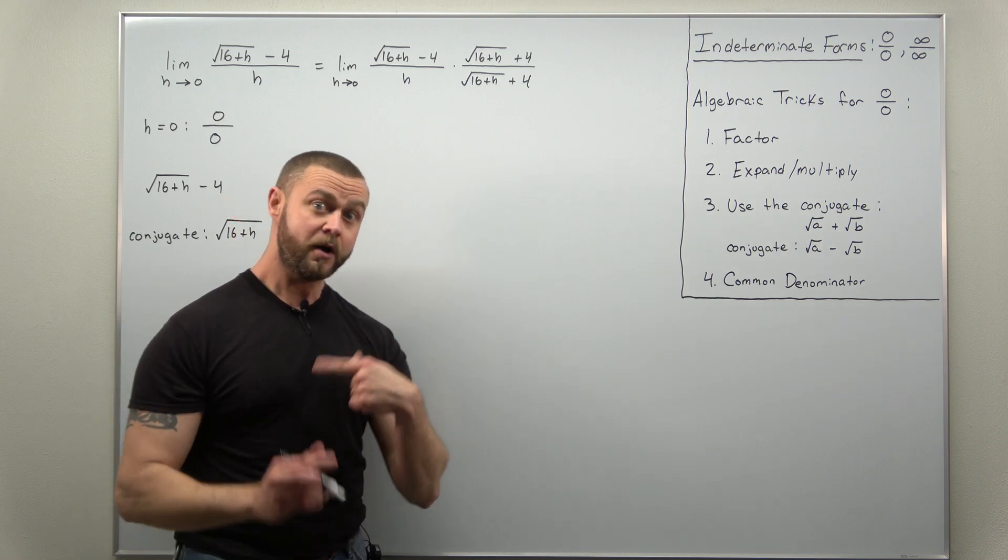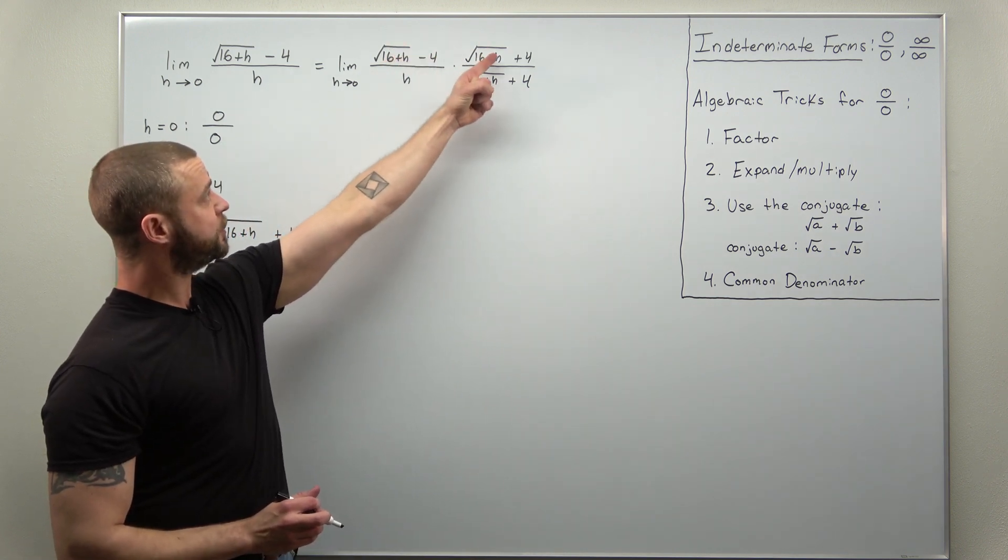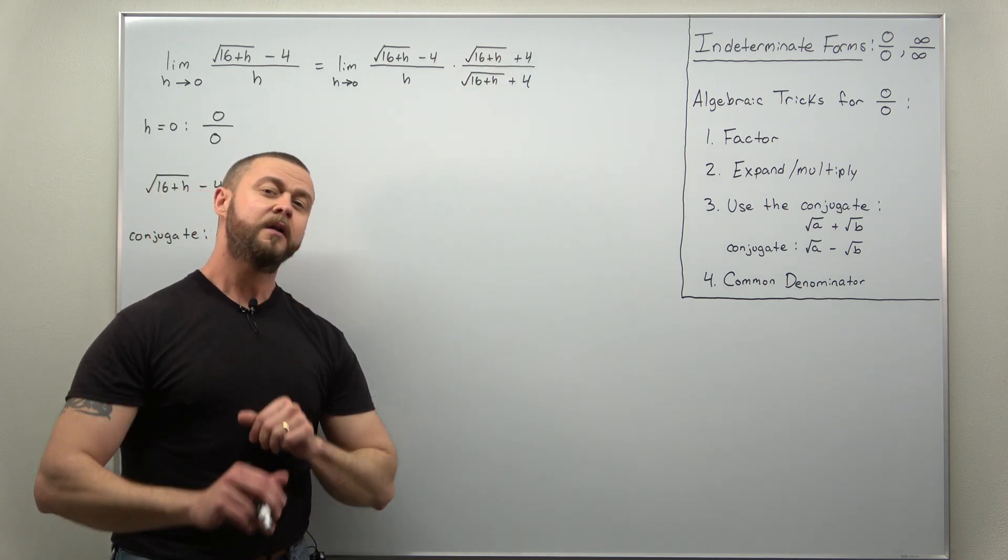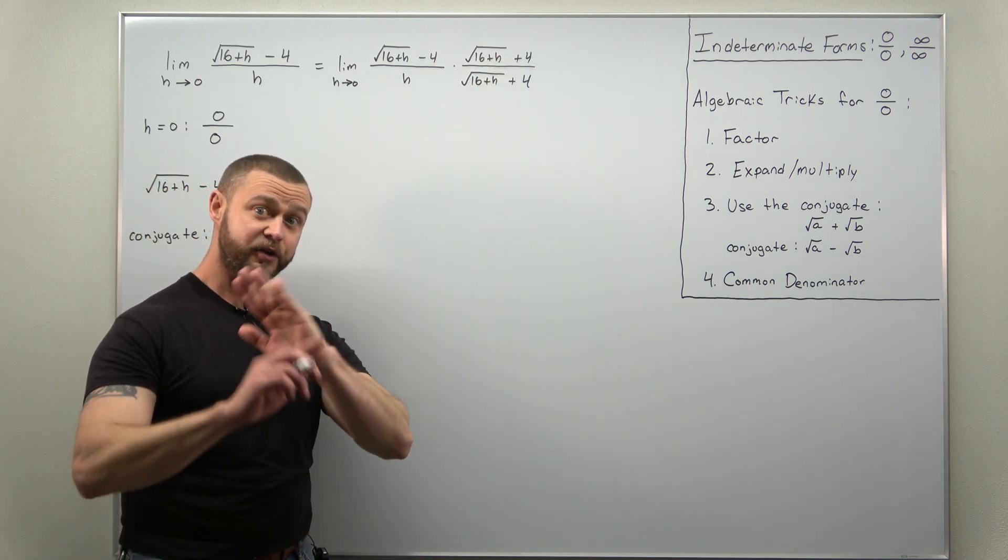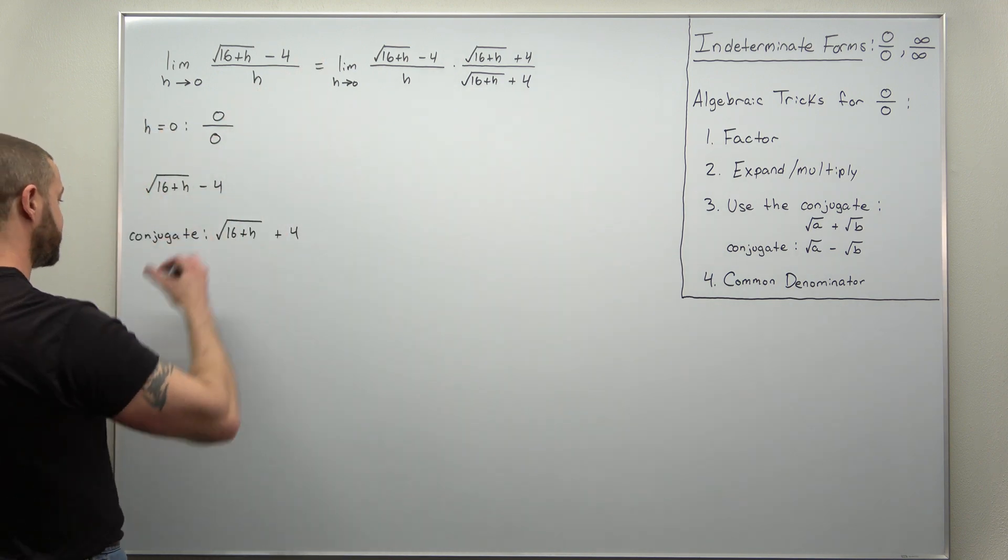Alright, now the rest of the work here, why we use the conjugate, is when you have an expression being multiplied by its conjugate, the square roots or radicals should cancel out everywhere. So let's go ahead and go through that work of multiplying the numerators.